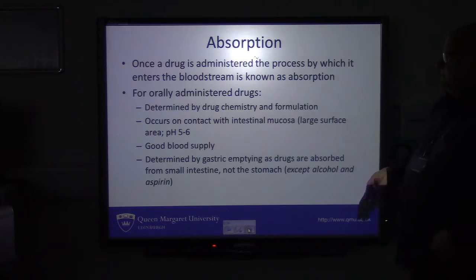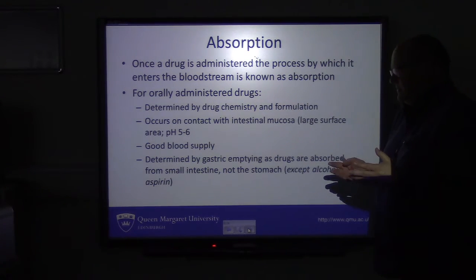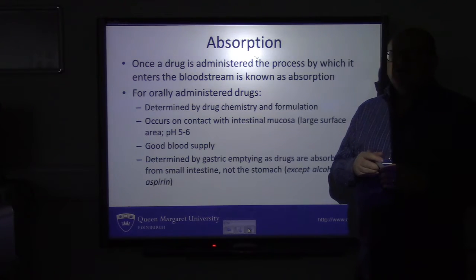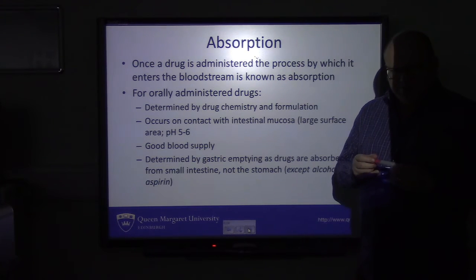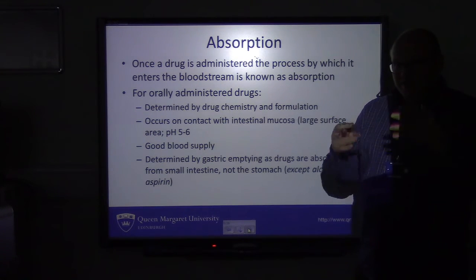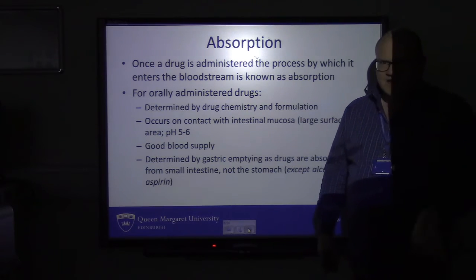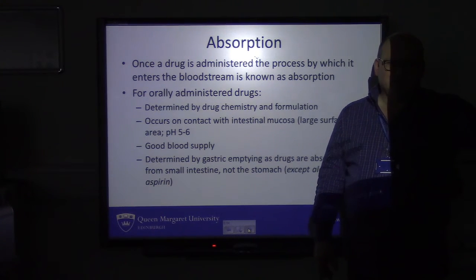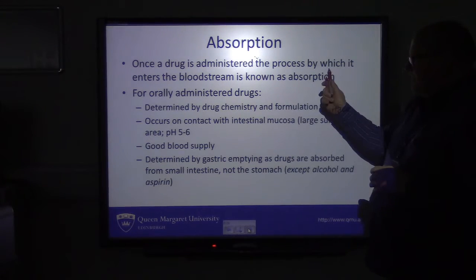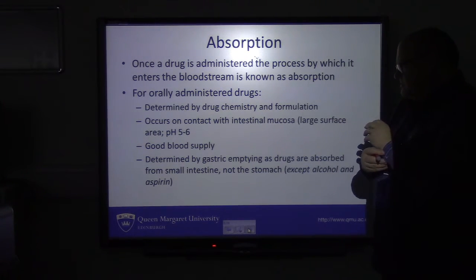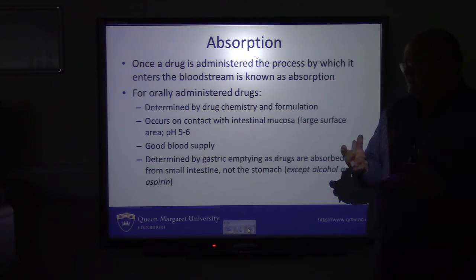Once a drug is given, it has to be absorbed — it's got to get into the bloodstream to pass around the body. A question often asked: when you take a painkiller, how does it know to go to your head? The answer is it goes into your stomach, gets absorbed, gets into the bloodstream, passes all the way around the body in the vasculature, and has an impact where it needs to. But it's going everywhere else as well. So for oral administration — the preferred route — you've got to make sure the drug has the right chemistry and formulation to get absorbed.